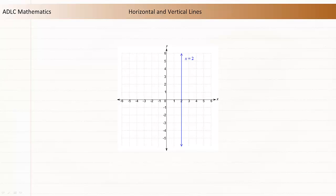The slope of a vertical line is not defined, so the slope-intercept form cannot be used to represent a vertical line.